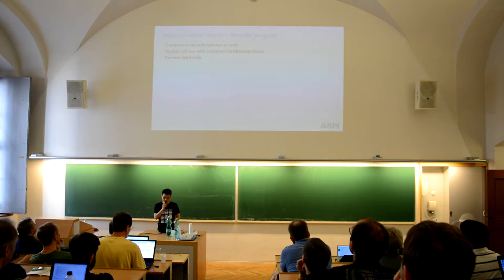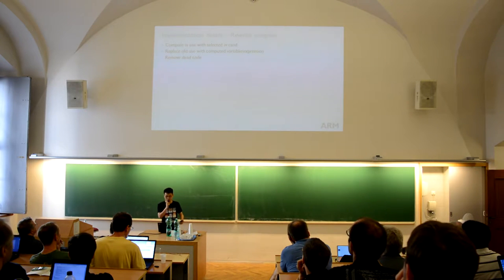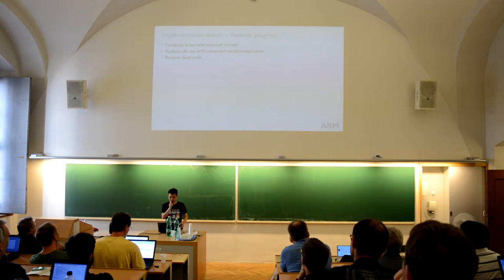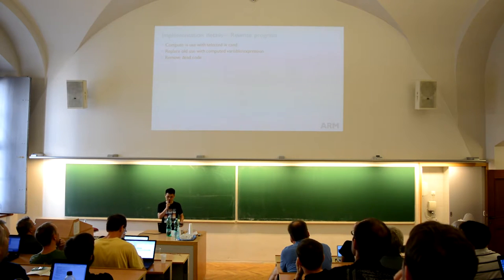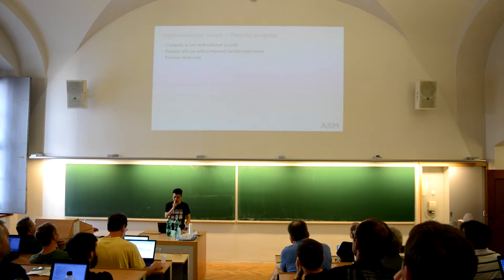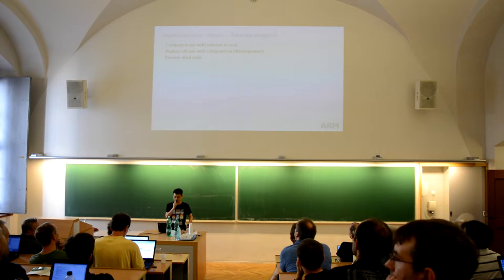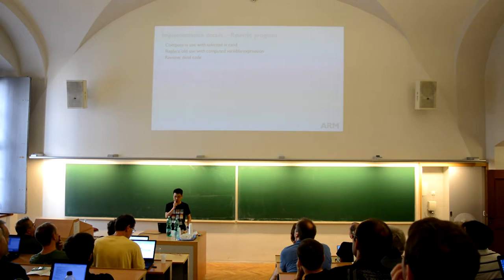After all of this, we just need to use the candidate ratios to rewrite the program. It's simple. We compute the uses, select the candidate, replace the old uses with the new ones, and just remove the dead code.